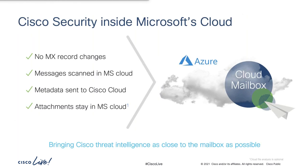What we want to do is move email security as close to the mailbox as possible, and we're doing this by integrating directly with Azure. We don't require any MX record changes. We don't require any change to mail flow at all. All of the messages are scanned natively in Microsoft's cloud. What we do is index metadata in our own cloud that allows for quick searching, reporting, and remediation. We can even keep the attachments inside of Microsoft's cloud for those customers that opt out of Cisco ThreatGrid, our cloud sandboxing solution. This product really is showing some innovation and interesting integrations with the Microsoft cloud.